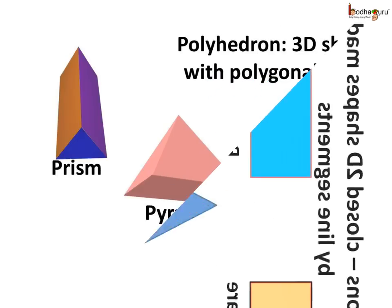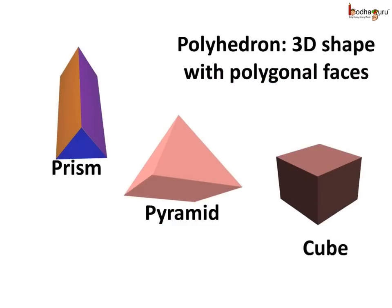So we can say a polyhedron is a 3D shape with polygon faces. So cube, prism, pyramid, etc. are polyhedrons, with each face being a polygon.